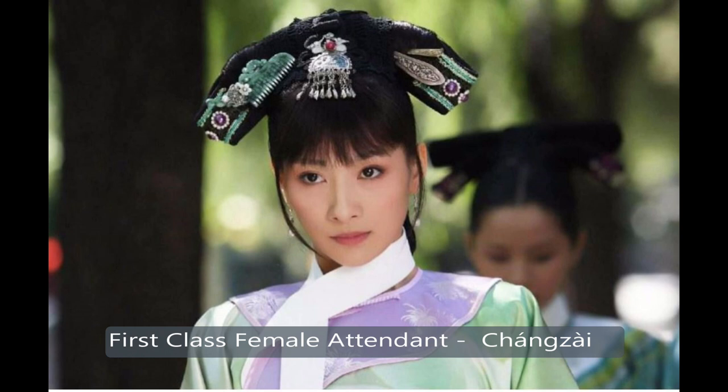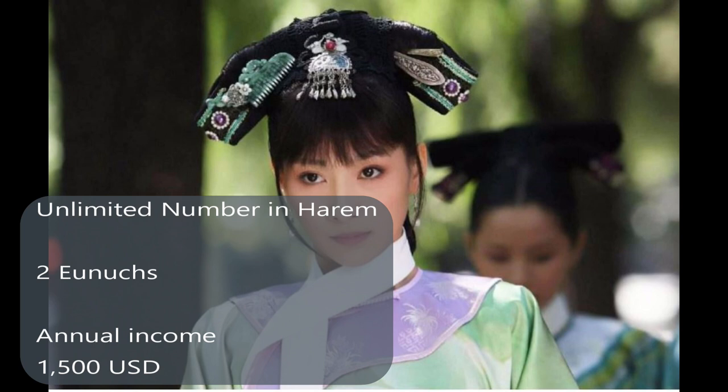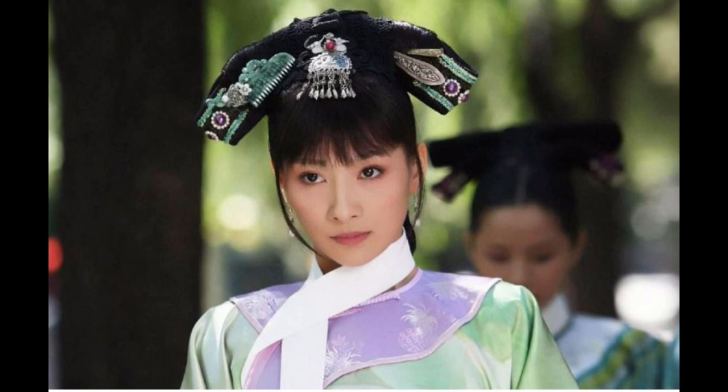The seventh rank is Changjai, or first-class female attendants. This is another low-rank concubine that the emperor can have in unlimited numbers. Only two units are given to her. These are low-class concubines who have no right to use a sedan unless given by the emperor. They cannot use a phoenix hat pin or any accessory containing a phoenix. Changjai have about $15,000 annual income.